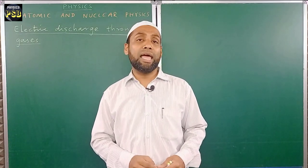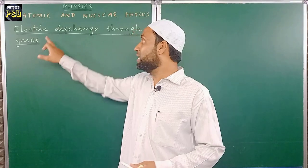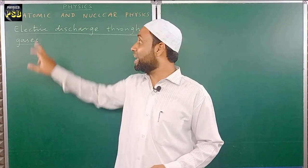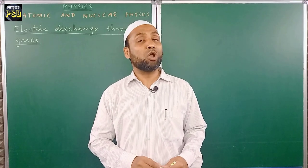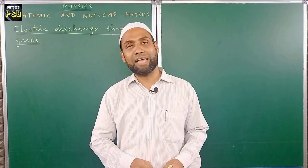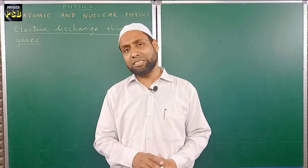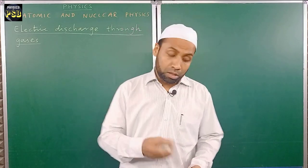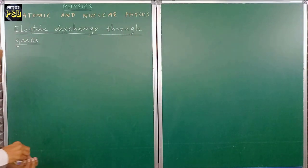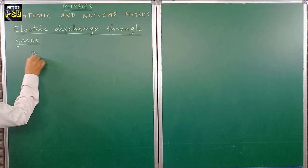In this video we discuss how one can make gases to allow electric current. We call this electric discharge through gases. Here, electric discharge means conduction of electric current through gases. To allow electricity to pass through gas, we use a special device known as a discharge tube.